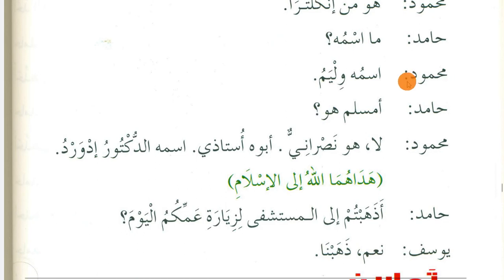Mahmood: Huwa min Inkiltara — He is from England. Hamid: Ma ismuhu? — What is his name? Mahmood: Ismuhu William — His name is William. Hamid: A muslimun huwa? — Is he a Muslim?